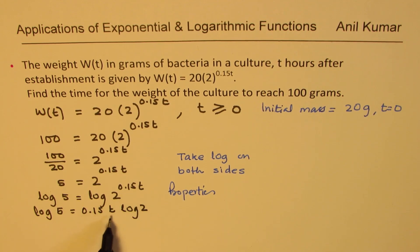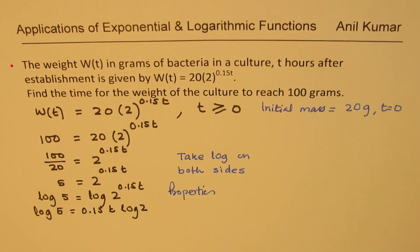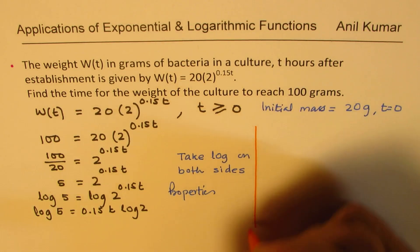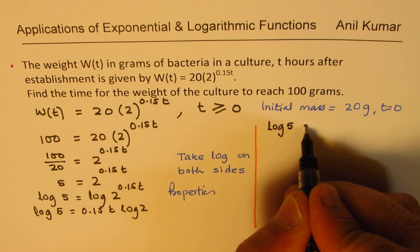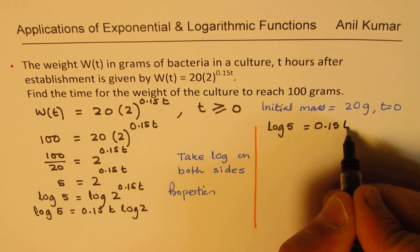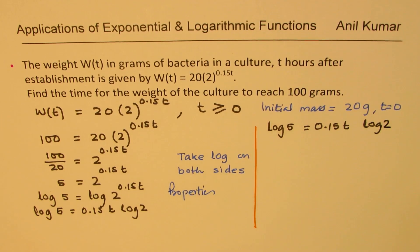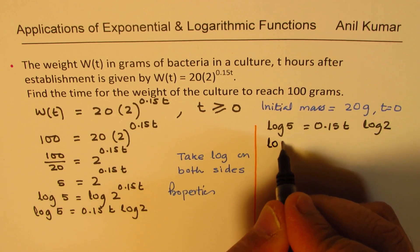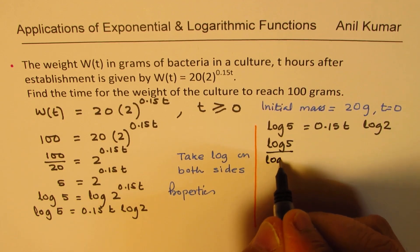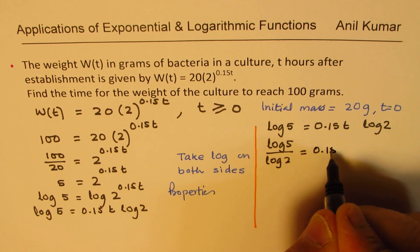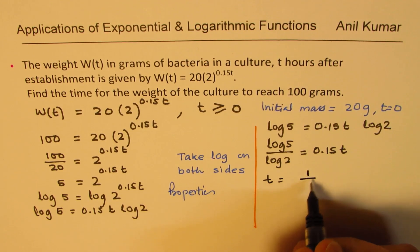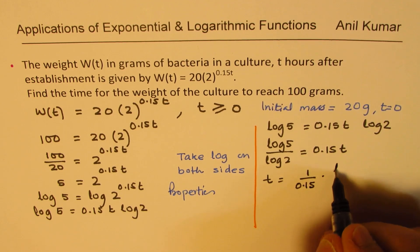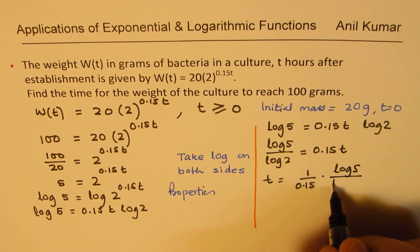Do you see that we have isolated t? Now let's take it to the right side and solve for t. We have log of 5, which is a number, equals 0.15 times t times log of 2, which is another number. So we get log of 5 divided by log of 2 equals 0.15t. Therefore, t equals 1 over 0.15 times log of 5 over log of 2.